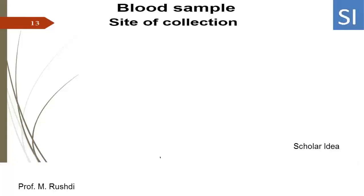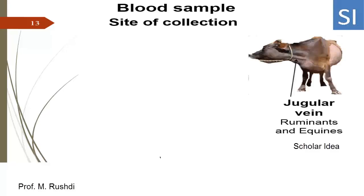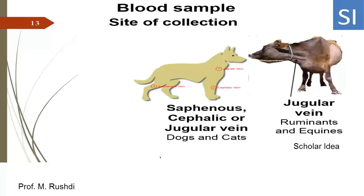Site of collection of blood samples in different animal species. The site of blood sample collection differs according to the animal species. For example, in ruminants and equine, the blood sample is collected from the jugular vein.